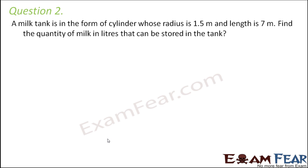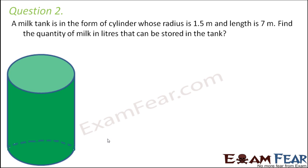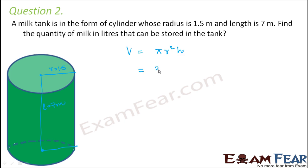Question number 2: A milk tank is in the form of a cylinder whose radius is 1.5 meters and length is 7 meters. You have a milk tank in this shape where the radius is 1.5 meters and the length is 7 meters. Find the quantity of milk in liters that can be stored in the tank — basically its capacity. So let's find the volume of the cylinder, which is given by π r² h.